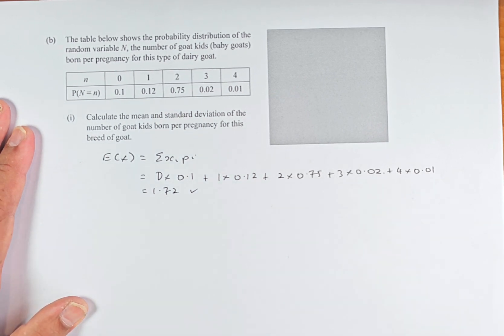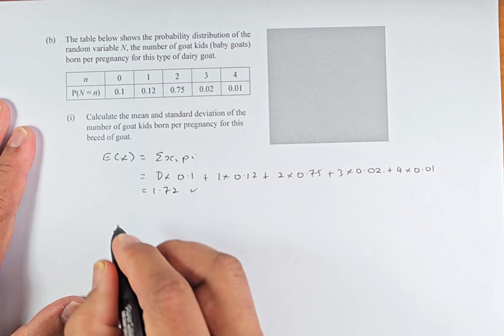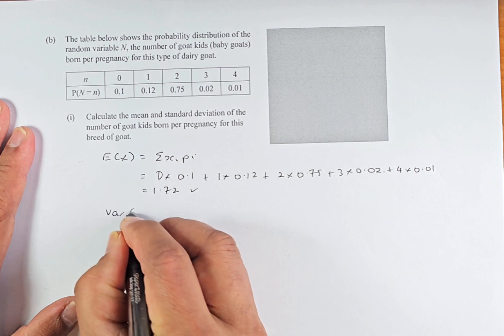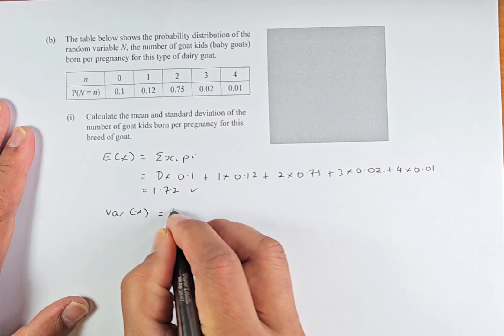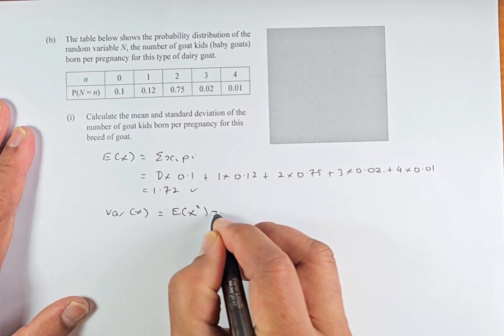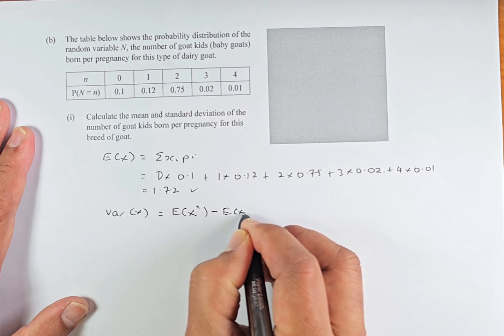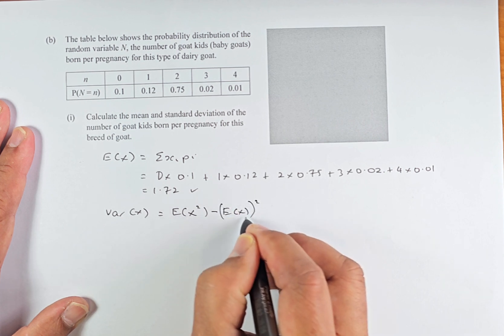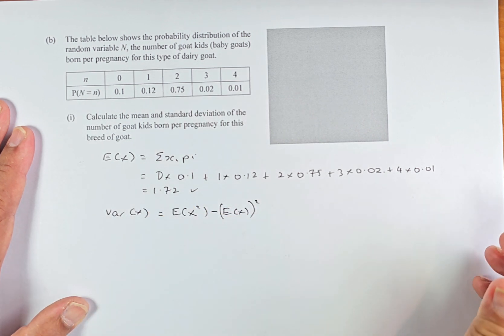To calculate the standard deviation, we need to calculate the variance first. Variance x is going to be e x squared minus e x, this whole thing squared. This part is actually the 1.72.